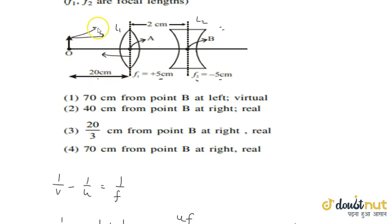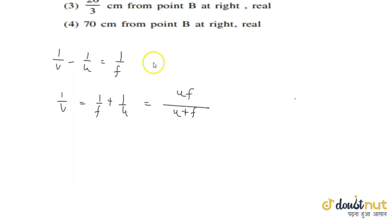So minus 20 is u, f is already given as plus 5. We can calculate v as minus 20 into 5 divided by minus 20 plus 5. This becomes minus 100 divided by minus 15. Minus and minus cancel out, and it comes out as 20 by 3.